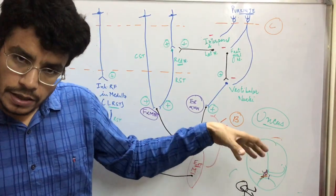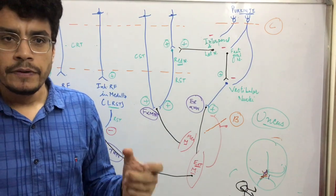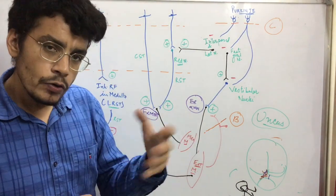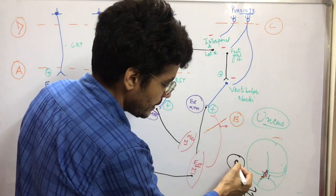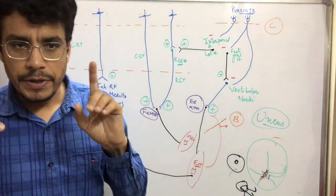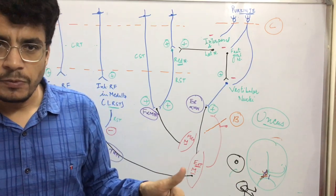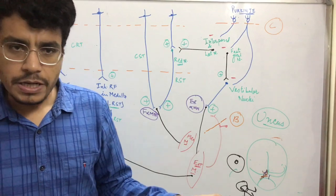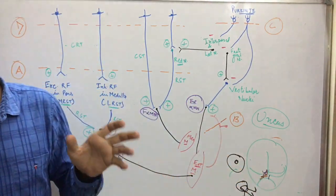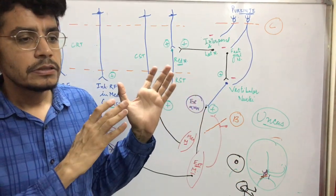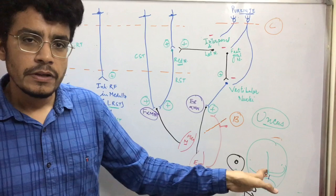With further increase in uncal herniation, the entire brain stem gets affected. Then there will be midline positioning because all the nerve supply will get affected — the position of the eye will be midline and fixed. The pupil in the middle will be fixed and won't react to any stimulus. The vestibulo-ocular reflex will be absent; it won't react to light. These are the clinical features related to the eye.